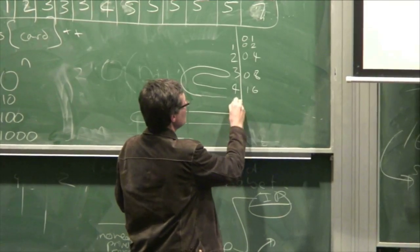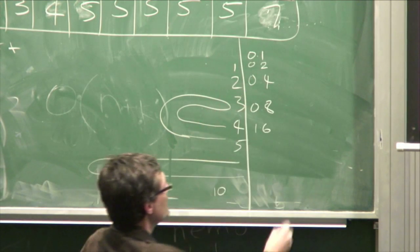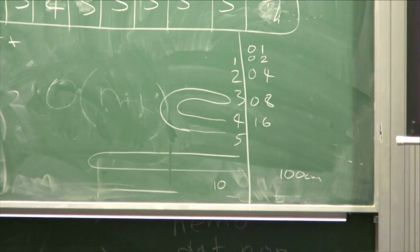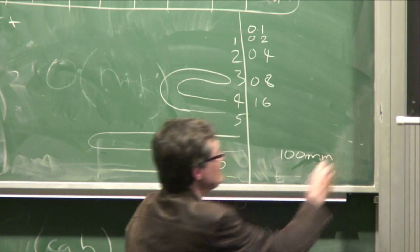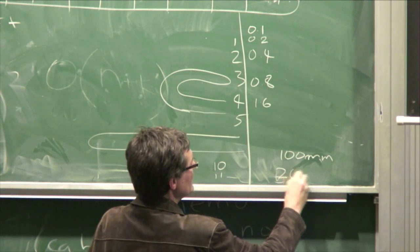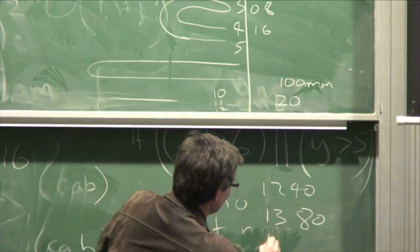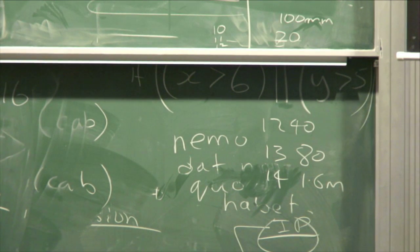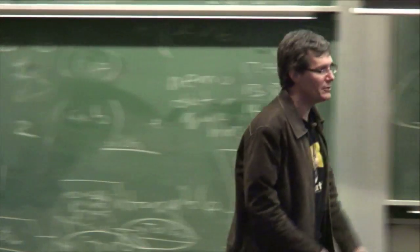We fold it 4 times and get 1.6 mm. Folding it 10 times: 2^10 is 1,000, so 1,000 times 0.1 mm is 100 mm — 10 centimeters thick. Fold it 11 times: 200 mm, which is 20 centimeters. Fold it 12 times: 40 centimeters. Fold it 13 times: 80 centimeters. Fold it 14 times: 1.6 meters thick. I'm trying to show you the enormousness of the growth of exponential things. They just grow enormously quickly. They're quite horrendous.